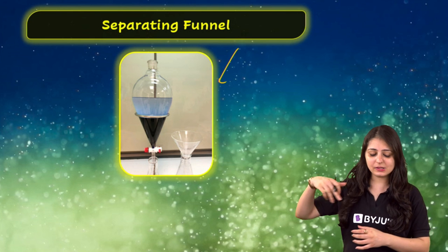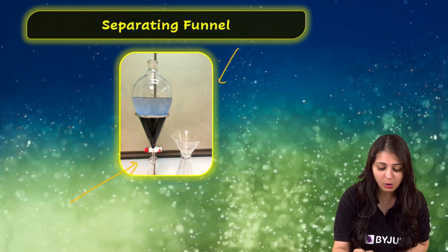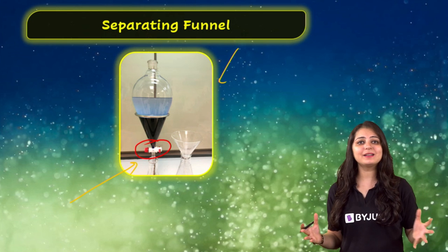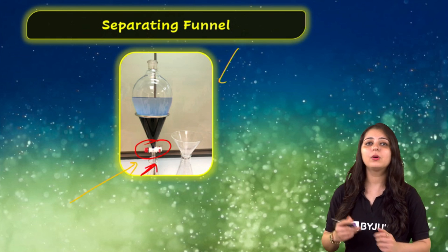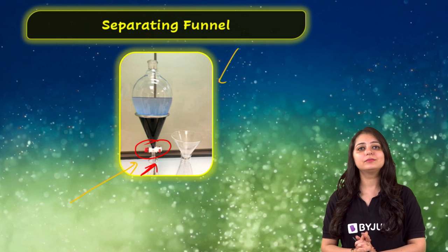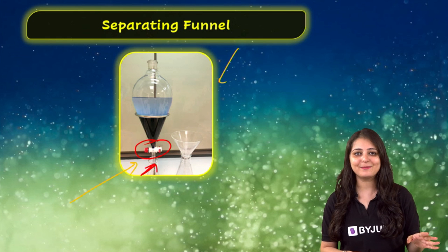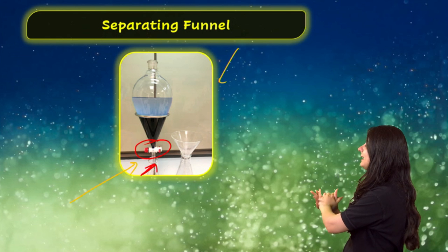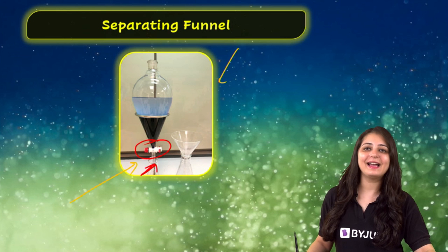A separating funnel is a cone-shaped equipment made from glass. It also has a hemisphere on the top. There is a stopper attached and a hole or tap at the bottom — the stopcock — which can be opened or closed. Today you've learned about another laboratory equipment, and whenever you go to the chemistry lab next, you'll be able to identify the separating funnel easily.